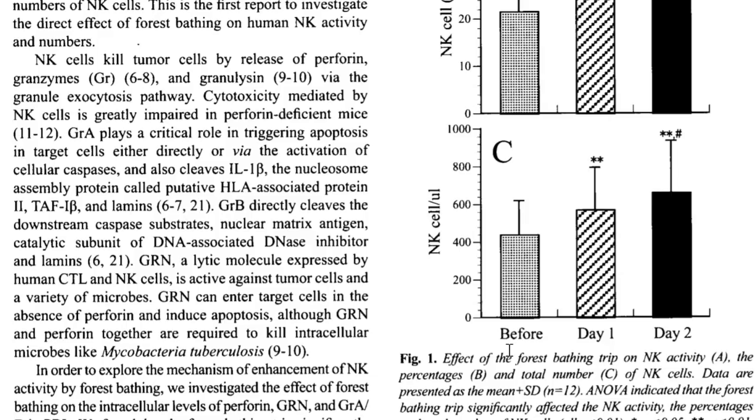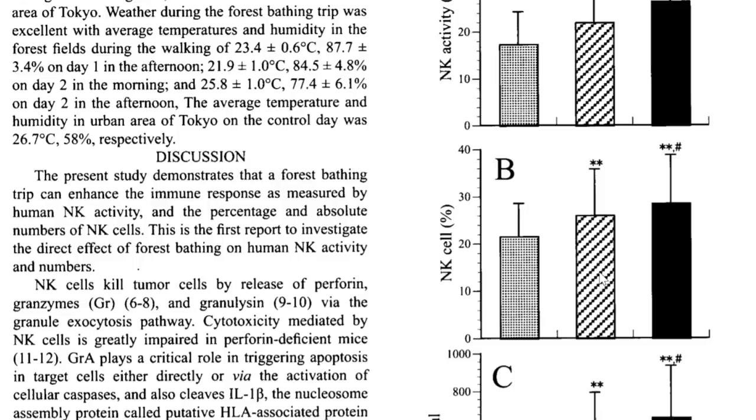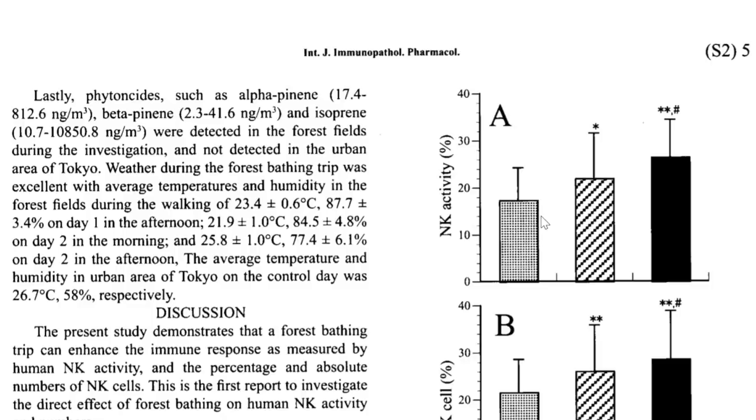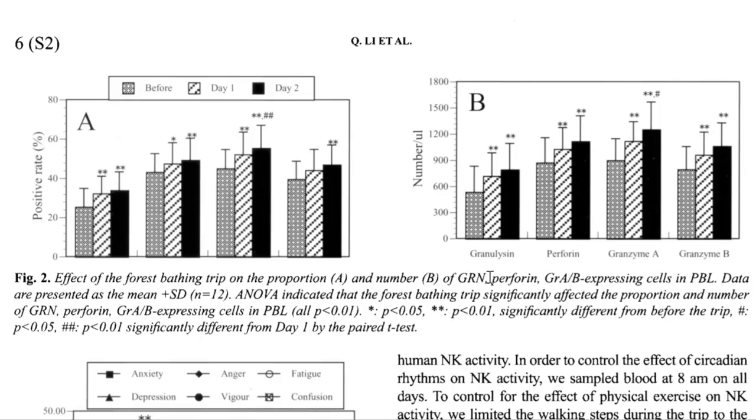Now let's see what they found. As you can see in this graph, on the before day one and day two, they were able to see natural killer cells per microliter went up statistically significantly on day one and day two relative to before and on day two relative to day one. The number of cells and the percent of cells also went up and the natural killer cell activity also went up.